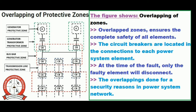The protection provided by protective relaying equipment can be categorized into two types: primary protection and backup protection. There are many conditions when primary protection may not operate. One example is failure of the circuit breaker, where the breaker cannot operate due to jammed contacts.